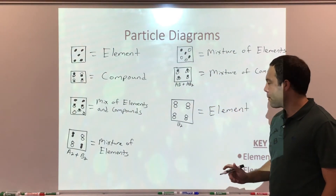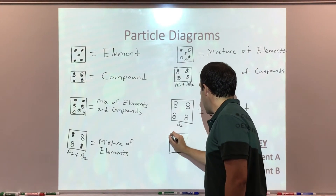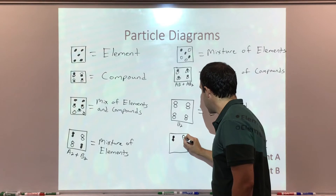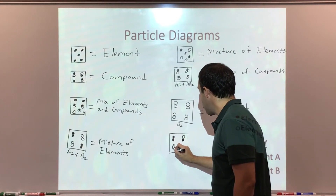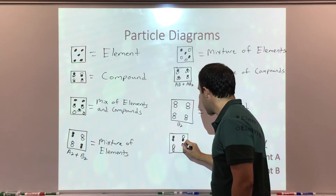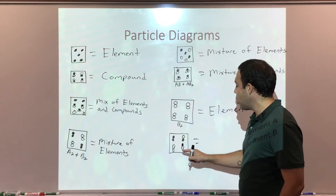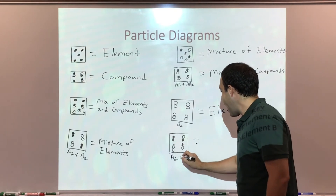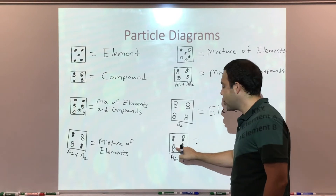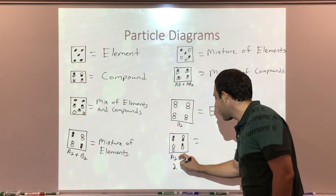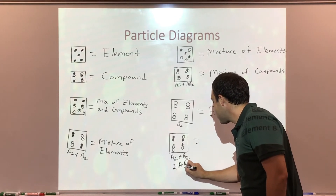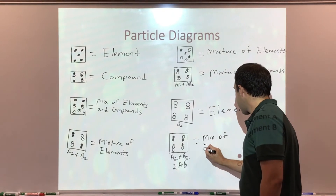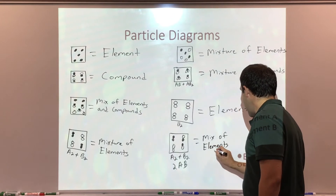And we can put it all together — we can have a mixture of elements and compounds. We can have two shaded, one open, one shaded, two open, and then one shaded, one open. So here in this final sixth box, I have A2, I have B2, and I have two ABs. So I have a mixture of elements and compounds.